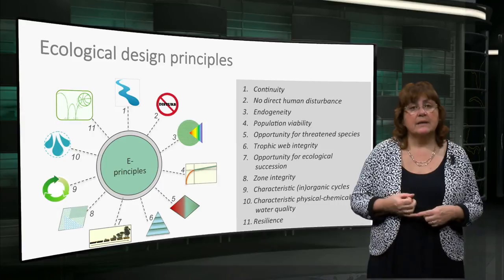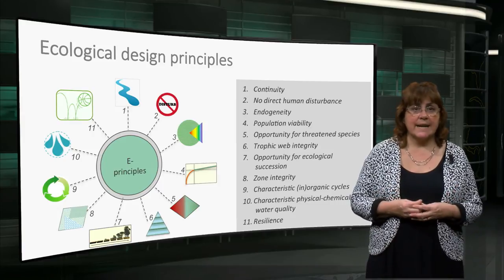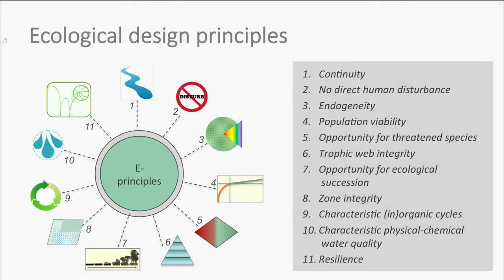To recap, there are 11 ecological design principles: continuity; no direct human disturbance; endogeneity; population viability; opportunity for threatened species; trophic web integrity; opportunity for ecological succession; zone integrity; characteristic inorganic and organic cycles; characteristic physical-chemical water quality; as well as resilience.